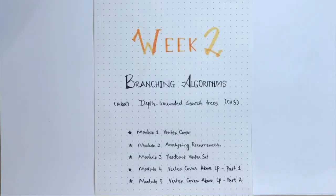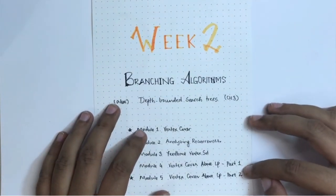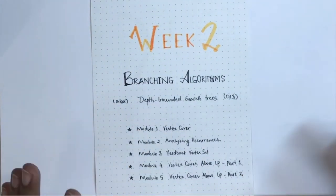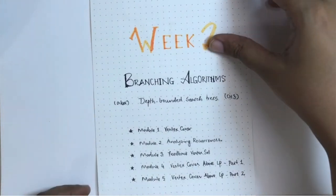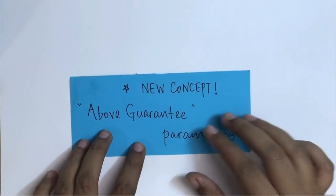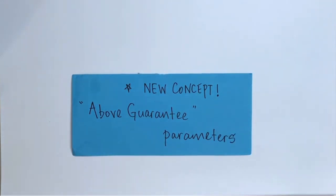Welcome to the fourth module of the second week on branching algorithms. This is a topic we will be covering in two parts — this lecture and the next final one — partly because we have a lot to say. This problem is called vertex cover above LP, and this lecture is the first time we will talk about a new concept called above-guarantee parameterization, which is a very natural and exciting thing to discuss.